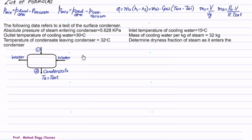The following data refers to a test of a surface condenser. The absolute pressure of steam entering the condenser is 5.628 kPa (P mix). Inlet temperature of cooling water TWI is 15°C, outlet temperature TWO is 30°C. Mass of cooling water per kg of steam, MW/MS, is 32. Temperature of condensate is 32°C.